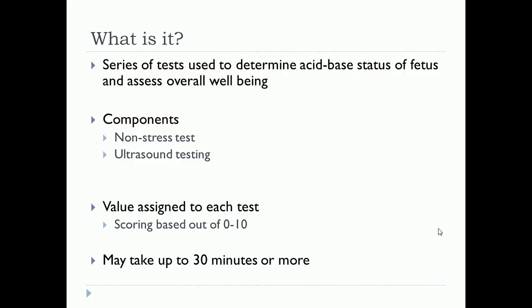So in total we have five parameters that we're going to be measuring. There will be a score interpretation that we'll need to use, with a value assigned to each test. Each component will be given up to two points, so our score will be between zero and ten. The test may take up to 30 minutes for a normal test, or even more for an abnormal test.